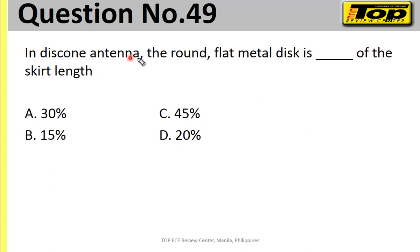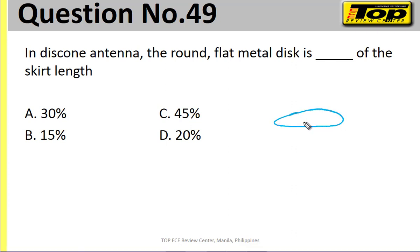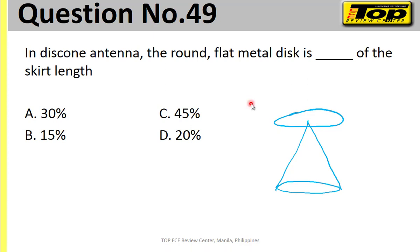Number 49. In a disc cone antenna, the round flat metal disc is blank of the skirt length. Just remember this — the disc cone is made of a disc and a cone, and it is a UHF antenna. The answer for this question is 30%, letter A. If this comes out on the board exam, we're lucky.